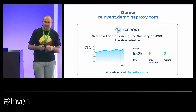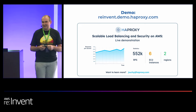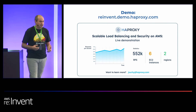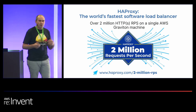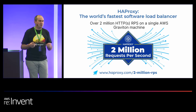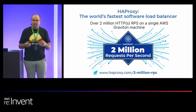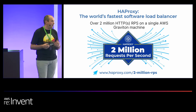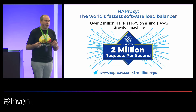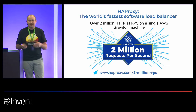I'm load balancing around 1.5 million requests per second on six AWS instances — T3X largest. And just to introduce HAProxy, we're the world's fastest software load balancer, and I have the benchmark to prove it. Our founder Willy did a blog post in 2021 about using HAProxy on Amazon Graviton instances and load balanced over 2 million requests per second on a single instance.